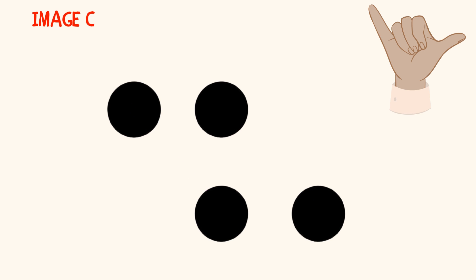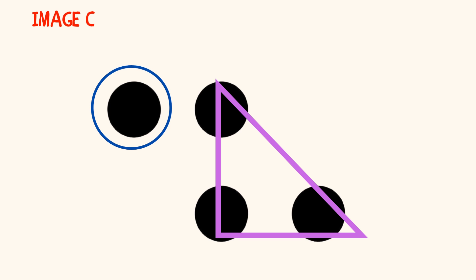There is no disagree signal in number talks. Remember, we're trying to build a positive math community. Another student may share that they saw one dot on the top left and three dots in a triangle on the right. And that one plus three is four.